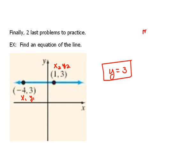Because you would say m equals y2 minus y1 over x2 minus x1 and then that would mean 3 minus 3 over 1 minus negative 4. Well right here this tells you that the slope is going to be 0 because it's 0 on top.